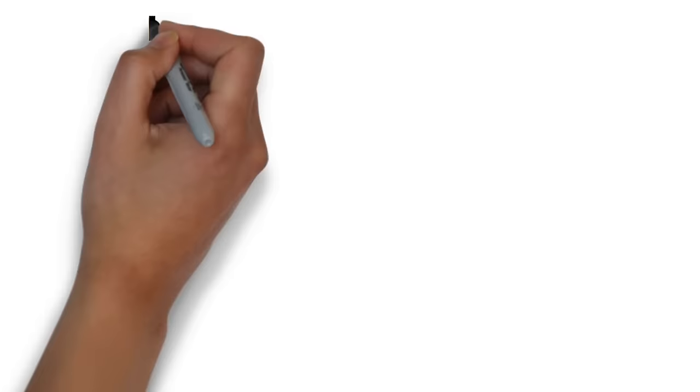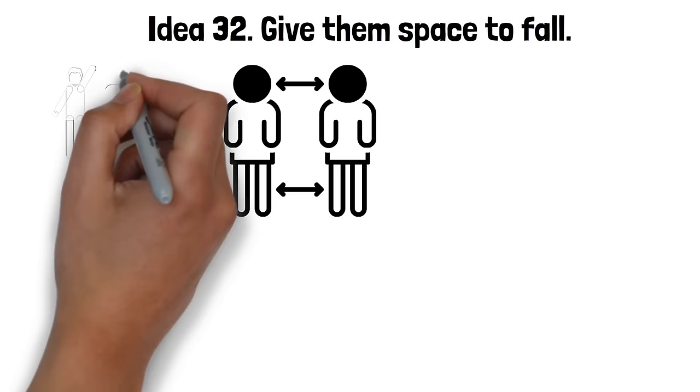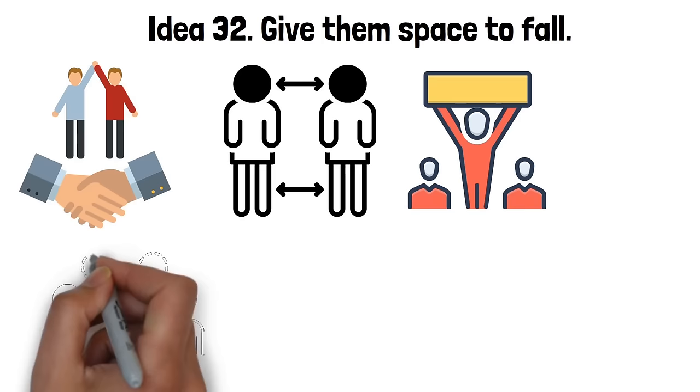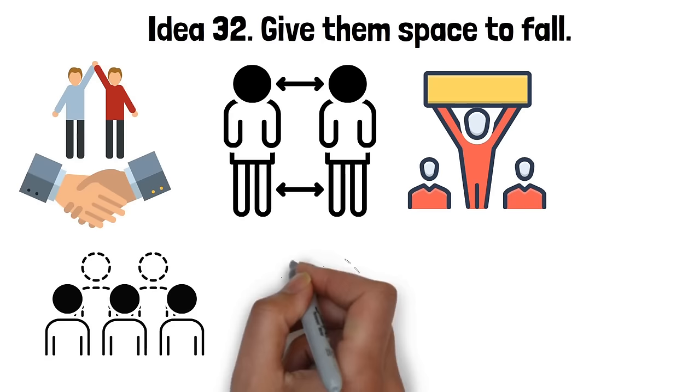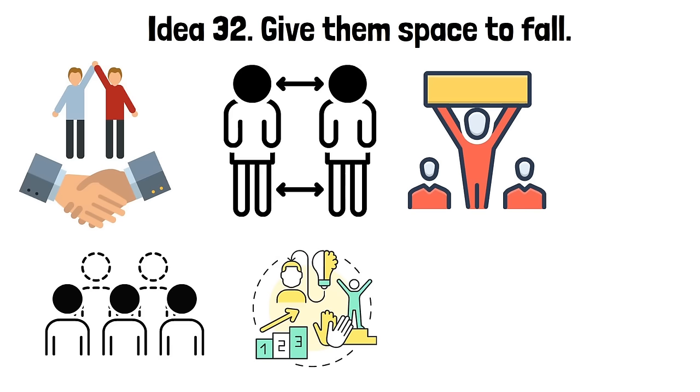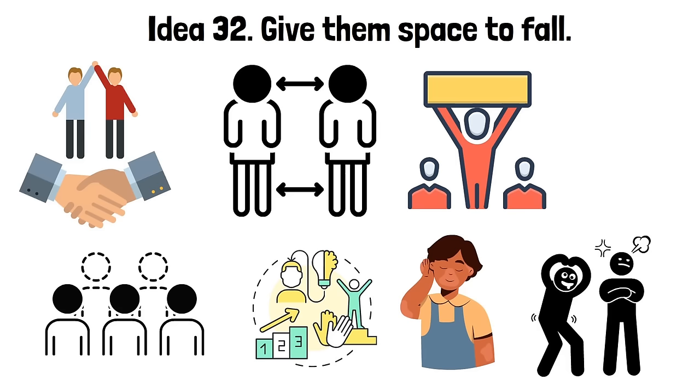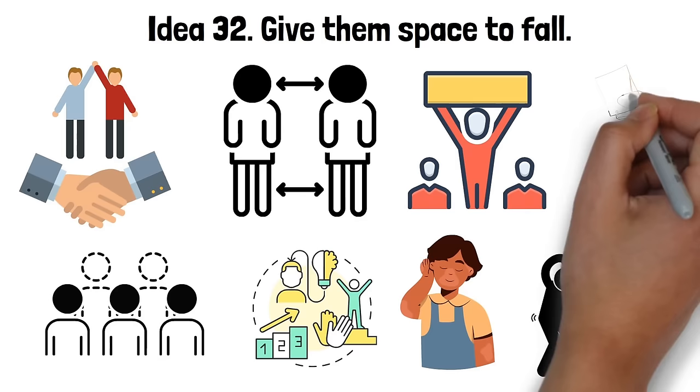Idea 32. Give them space to fall. The concept of giving them space to fall is essentially about creating a dynamic where the other person can actively participate in the seduction process. It's about striking a balance between pursuit and retreat, making yourself desirable yet somewhat elusive. The idea is to make your presence felt, but also allow for moments of absence, sparking a longing for your return. It's akin to creating a dance of attraction and intrigue where the other person is encouraged to step forward and invest their emotions. This approach fosters a sense of autonomy, making the person feel they are choosing to fall for you, which can deepen their emotional involvement and attachment. Remember, however, this method requires skillful execution, ensuring you don't retreat so much that you appear uninterested or distant.